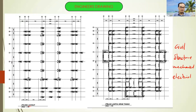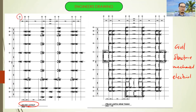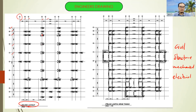As an example, the piling layout gives you information about the grid line — we have A, B, C, D, E and 1, 2, 3, 4, 5. It also gives you information about the position of the column, the position of the pile cap, and the type of pile cap.